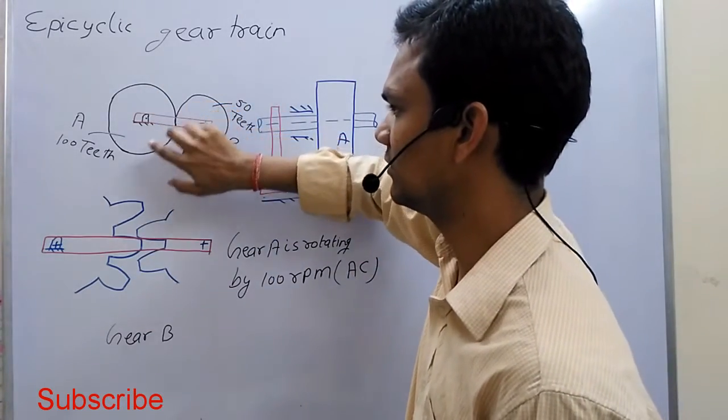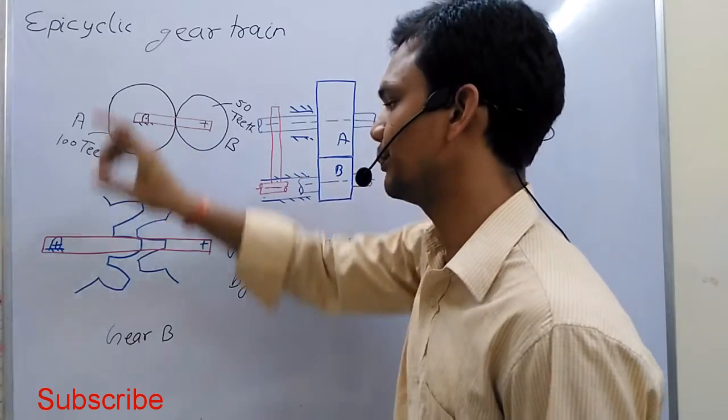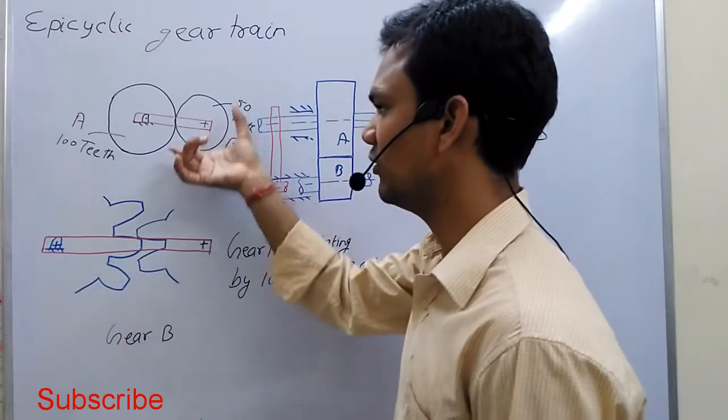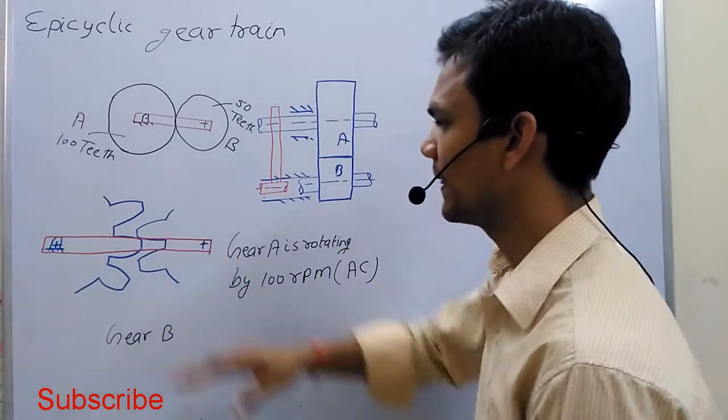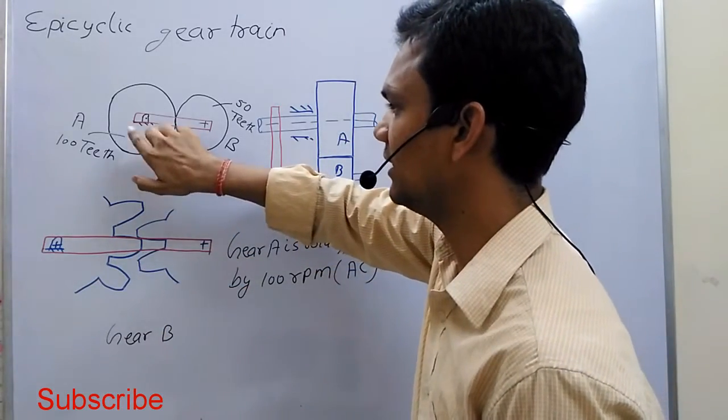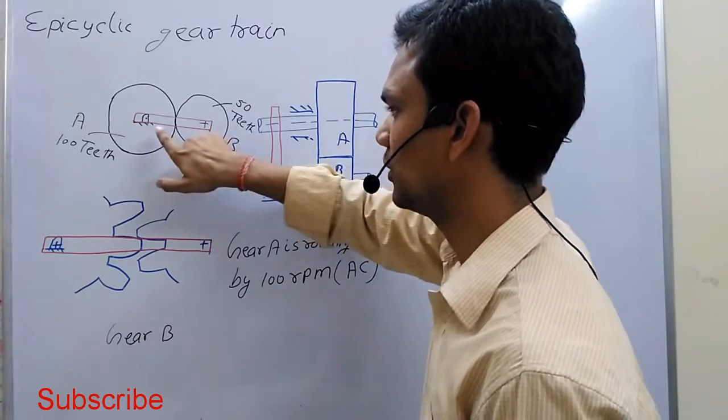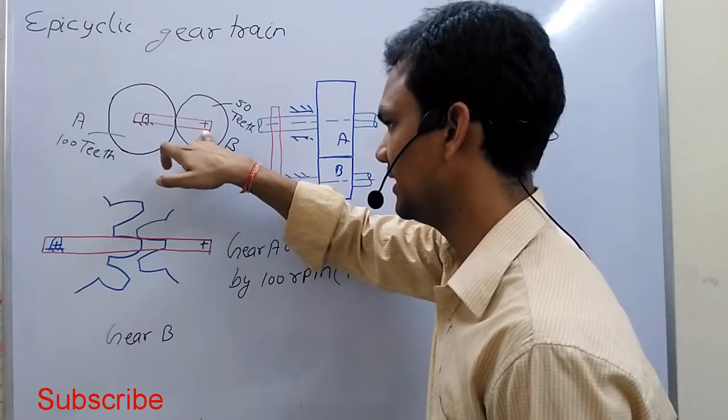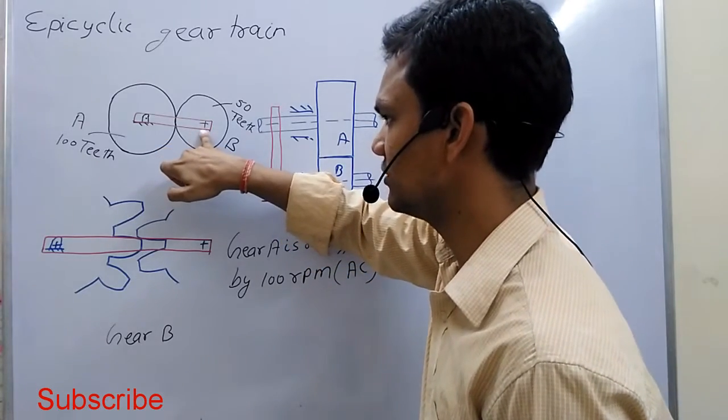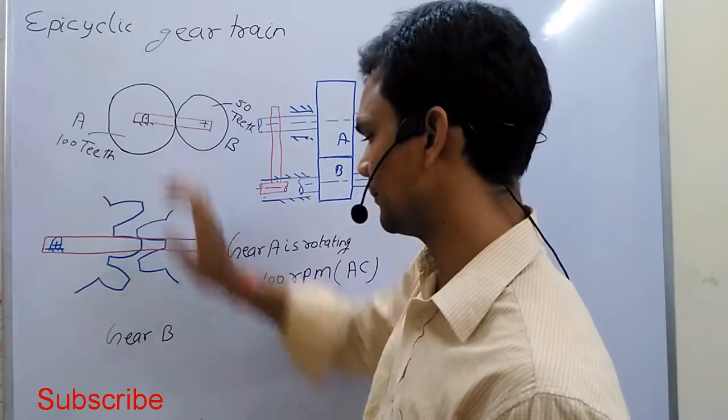The gear also has teeth, as you know, so the gear cannot slip with respect to the other; it rotates. One other link is used to rotate the axis of the gear. This link is known as the arm or carrier.